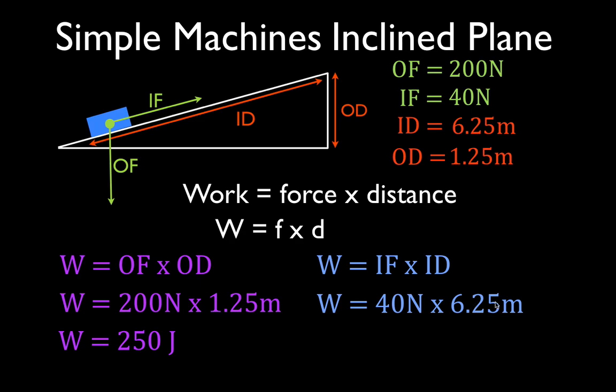The ramp is five times longer than it is high. So, when we multiply 40 times 6.25, we still get 250 joules.